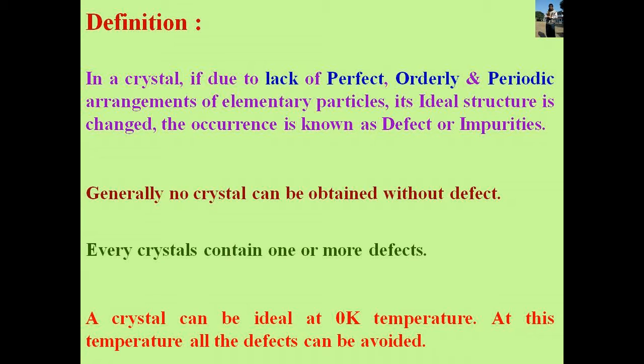Do you know what is a defect or impurity? In a crystal, if due to lack of perfect, orderly and periodic arrangements of elementary particles, its ideal structure is changed, the occurrence is known as a defect or impurity. Generally, no crystal can be obtained without defect. Every crystal contains one or more defects. A crystal can be ideal only at 0 K temperature; at this temperature all defects can be avoided.